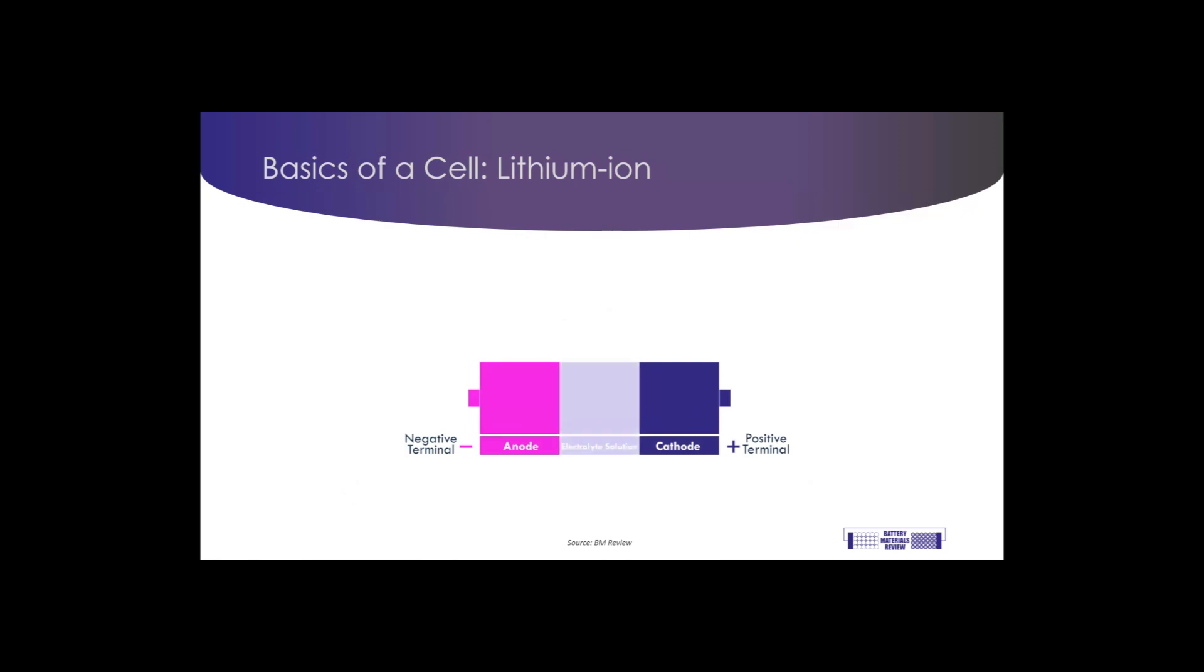the electrolyte solution, which allows positively and negatively charged particles to flow between the anode and cathode; and the separator, which makes sure that only the right particles pass through. These are then linked by a circuit, which can either be charged or discharged.